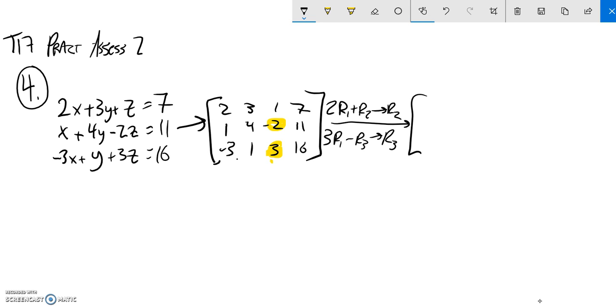So, 2 times row 1 plus row 2. 2 times 2 is 4, plus 1 is 5. 2 times 3 is 6, plus 4 is 10. 2 times 7 is 14, plus 11, that gives me 25.